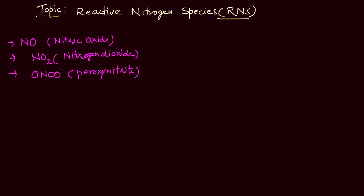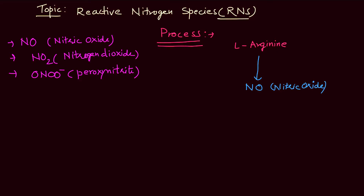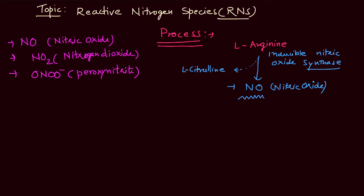We will discuss in detail the process of formation of these reactive nitrogen species. These species are formed from L-arginine — that is the starting point. From there, the important step is the formation of nitric oxide from L-arginine, and this formation is induced by inducible nitric oxide synthase enzyme. This enzyme is important in the formation of NO, which is nitric oxide, and also releases the product L-arginine.